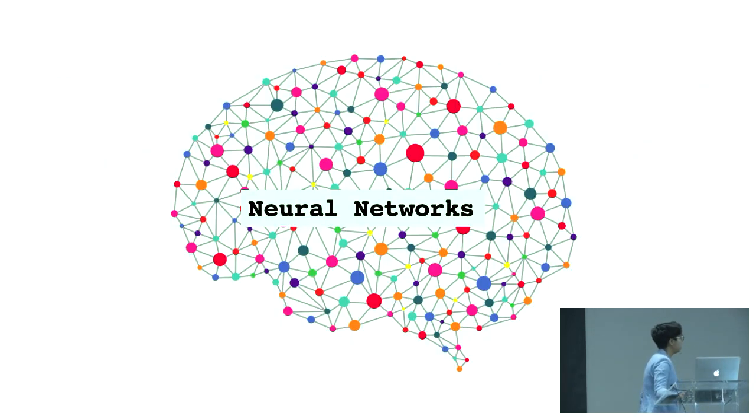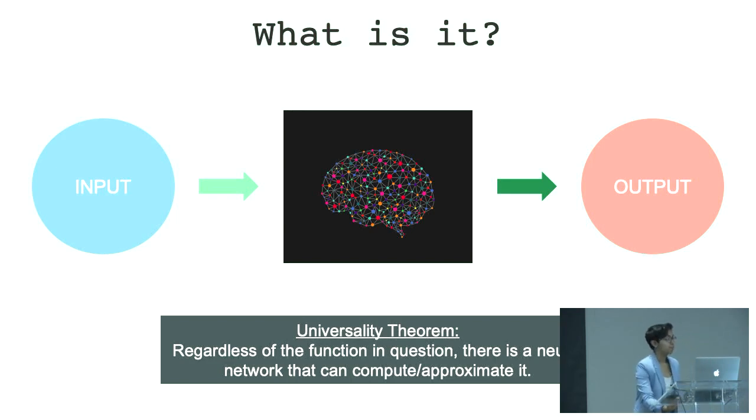Has anyone worked with neural nets? Oh my god, there's so many cool people here. So again, just stay for the animations. Basically what is it? This is kind of the heart of the black box at the moment. What it does is it takes an input, does this black box magic, and then comes out with a really wonderful output. The great thing about neural nets is that the universality theorem applies, which means that regardless of the function it needs to solve for, there is a neural net that can either solve for it or approximate very well for it. That's incredibly powerful.